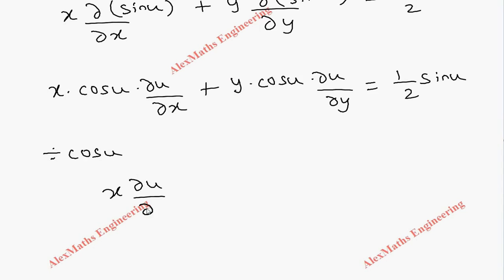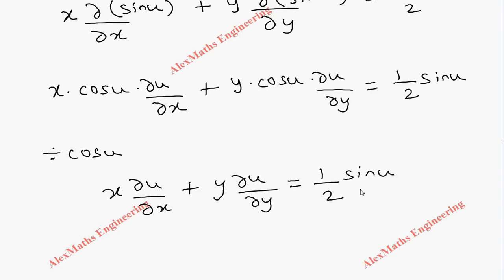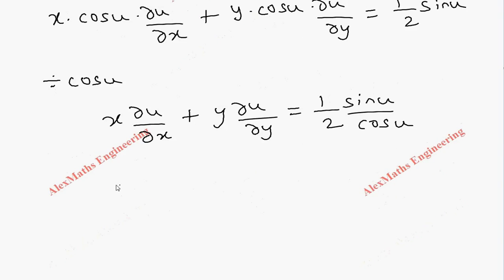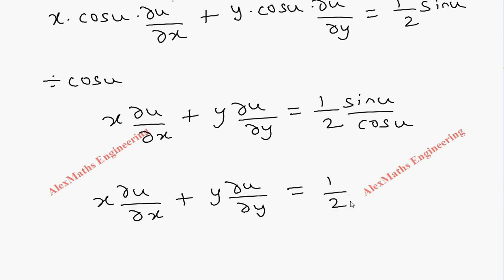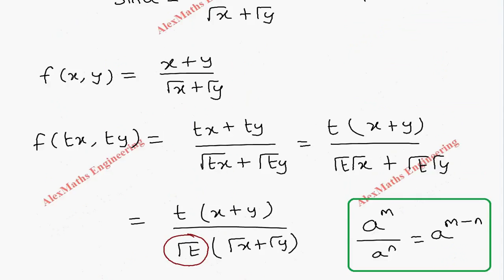So x · cos(u) · ∂u/∂x + y · cos(u) · ∂u/∂y = (1/2)·sin(u). Dividing throughout by cos(u), we finally get x · ∂u/∂x + y · ∂u/∂y = (1/2)·tan(u). So we got the first part of the proof.